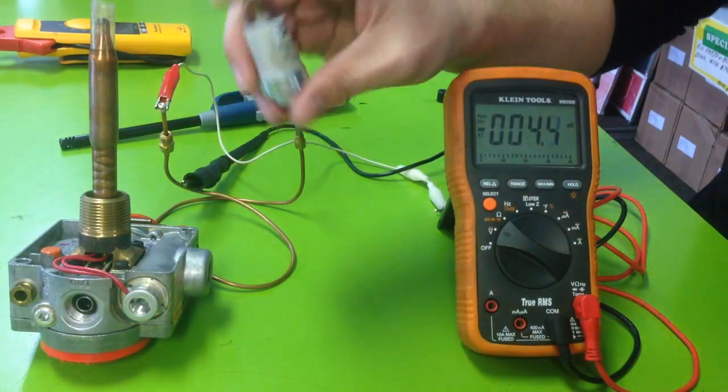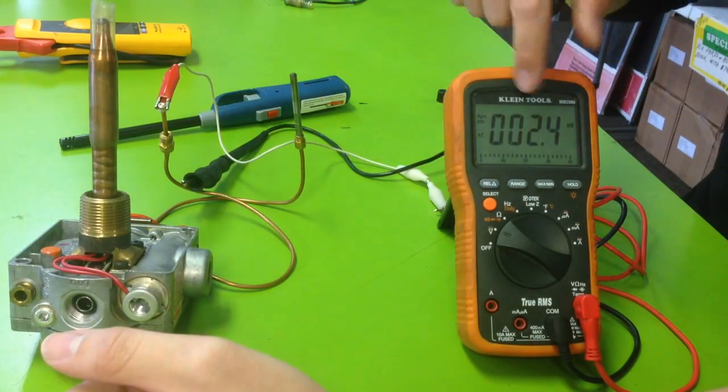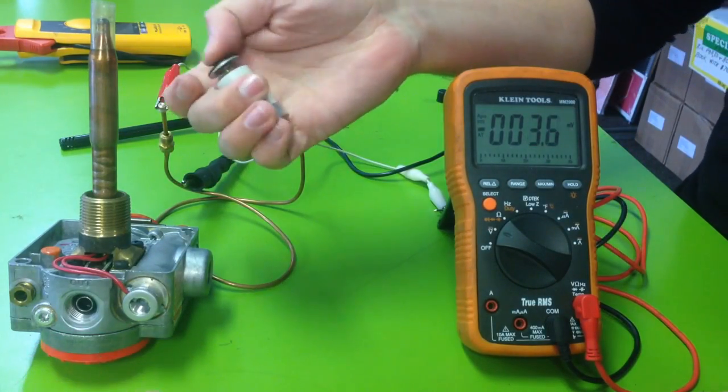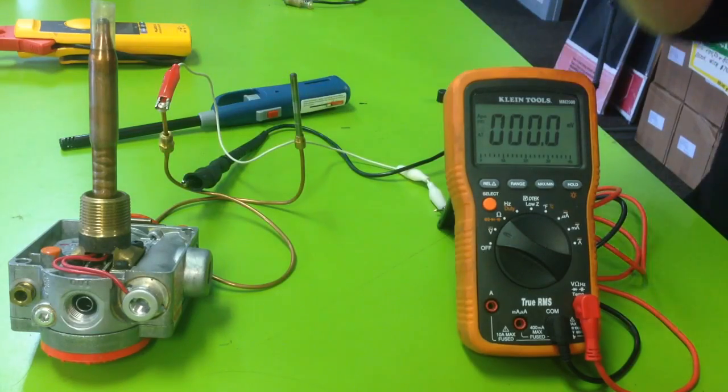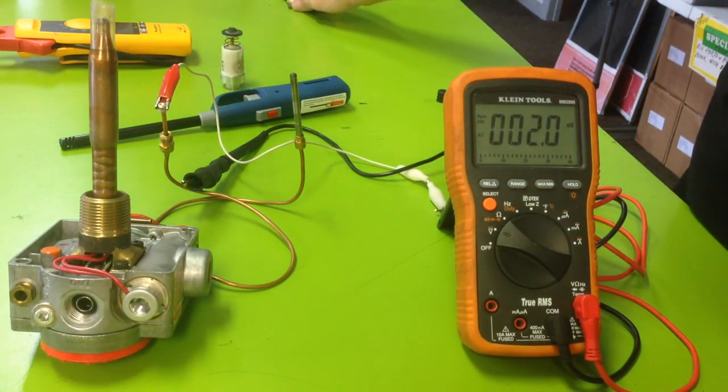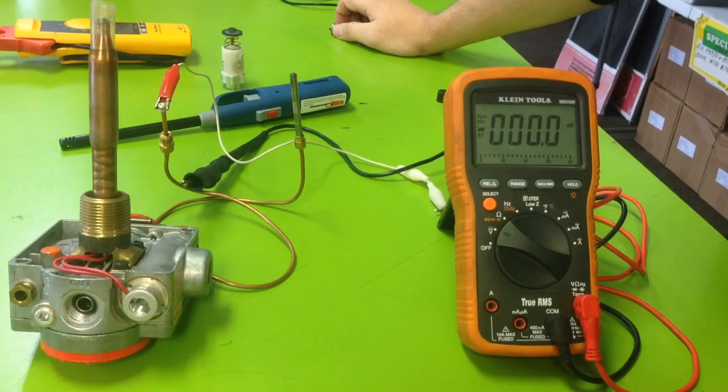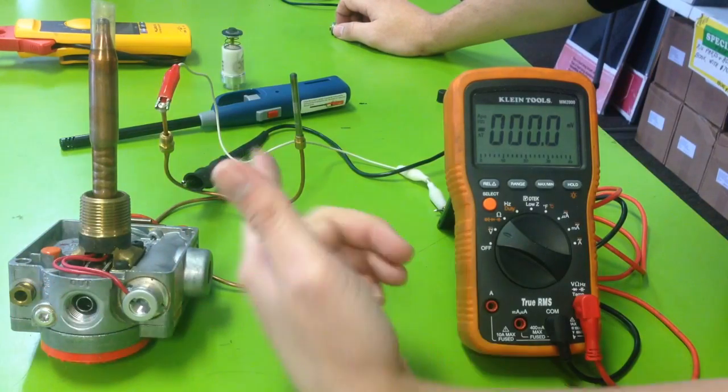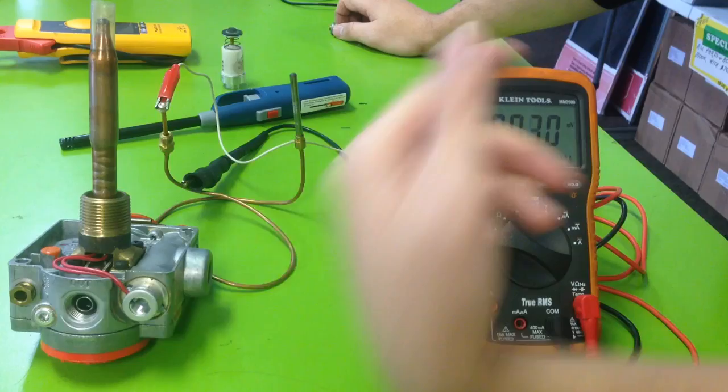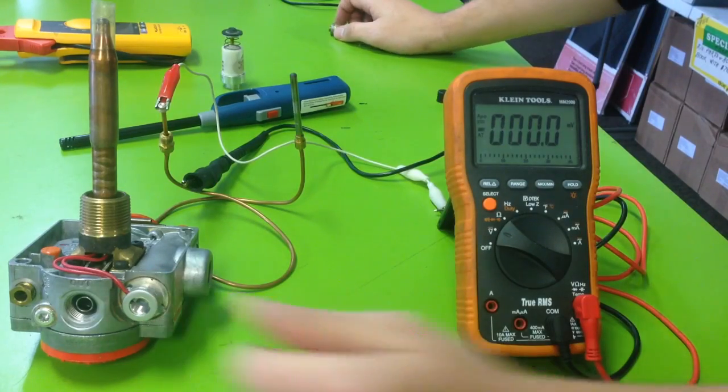You saw in my other video, you can actually buy these thermocoupler testers where instead of looking for a millivolt reading, you just simply see if it holds the valve down. That's a more foolproof way of doing it. But the way you do it with the meter - stupid simple. You just hook it up like I just did and you see if it's generating millivolts. Thanks guys.